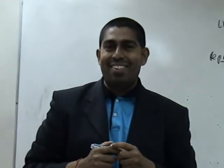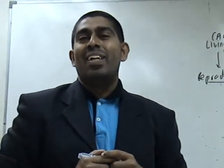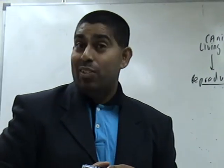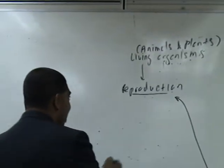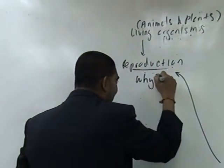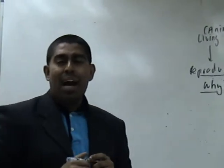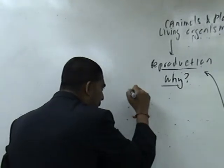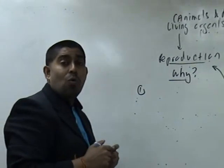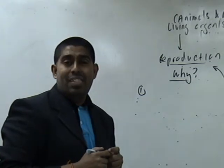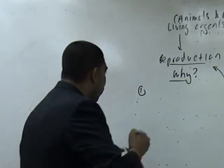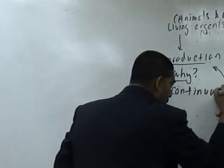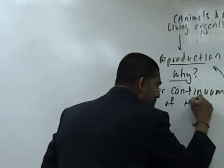The process of reproduction. Now, why do organisms carry out the process of reproduction? That is an important question. Why does a living organism have to undergo the process of reproduction? Number one — the most important reason — would be for it to continue its species. In other words, for the continuation of its species.